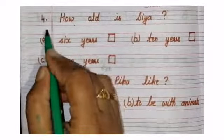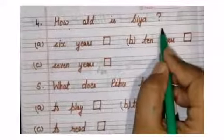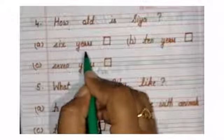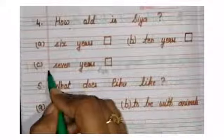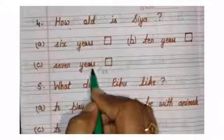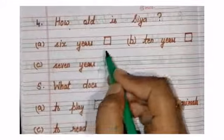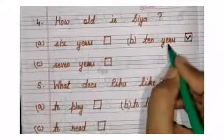Question number 4, how old is Sia? Sia kitne saal ki hai? Option A, six years. Option B, ten years. Option C, seven years. Then tell me, how many years of Sia? Sia is ten years. Correct answer is ten.